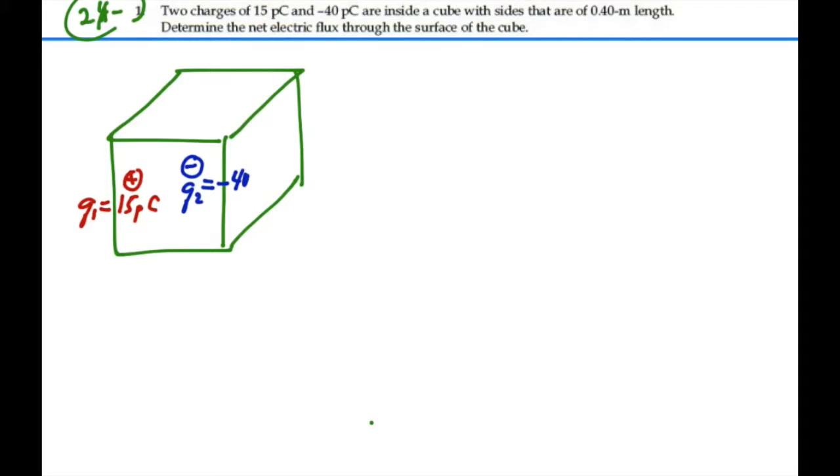Let's try to imagine what we've got here. We've got a cube. And inside, we've got two charges. One's a positive charge. Let's call it Q1, which is equal to 15 picocoulombs. And then we also have a negative charge somewhere. Let's call that Q2, and that is equal to minus 40 picocoulombs.